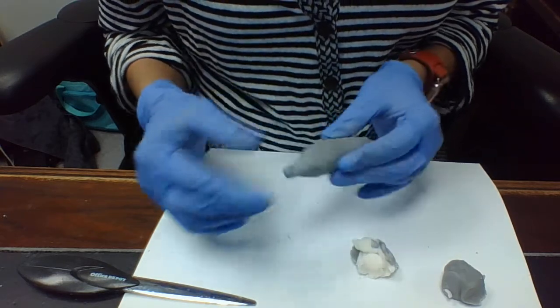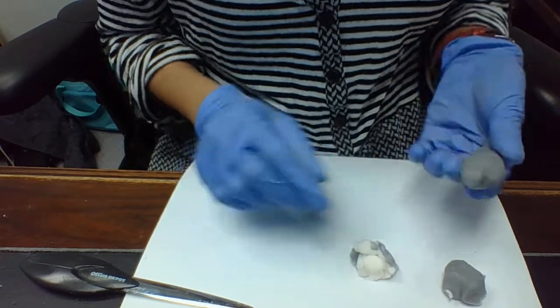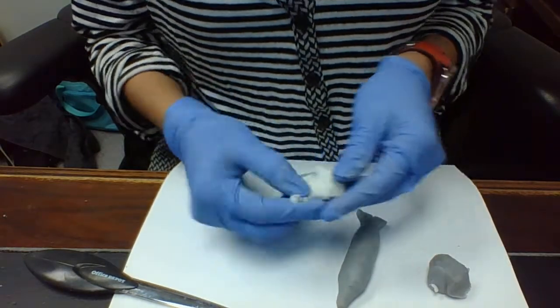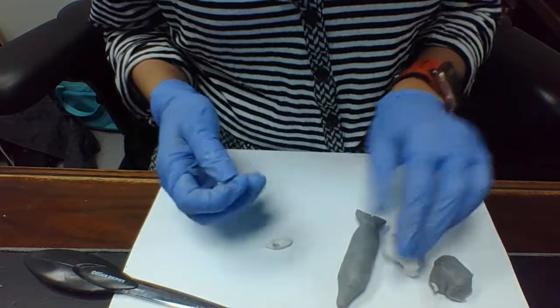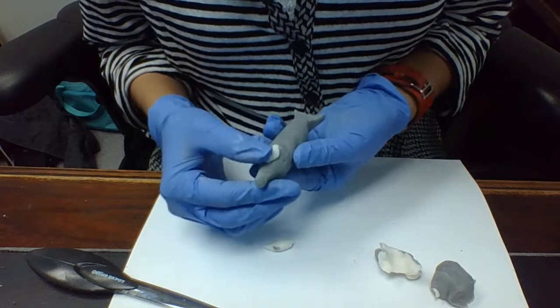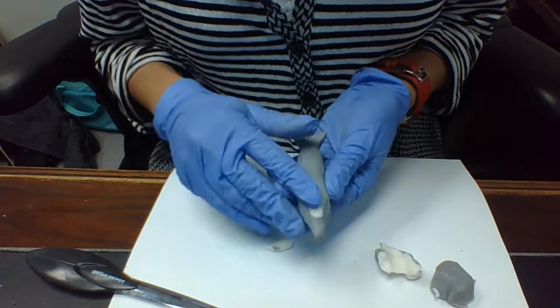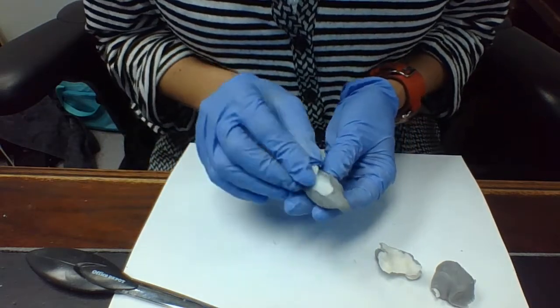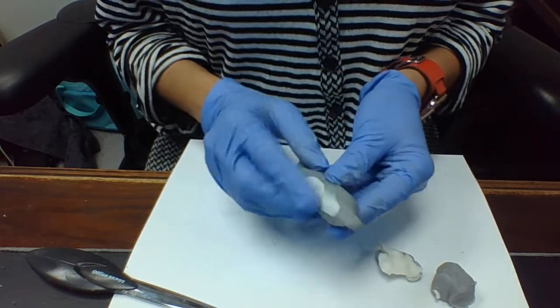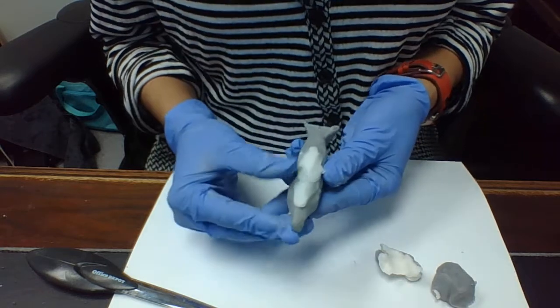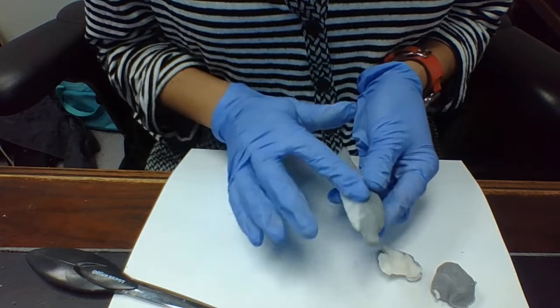At this point I'm going to use the white and I'm going to add it to what I will consider to be the bottom part of the dolphin and then just smooth it in to make it stick, like this.